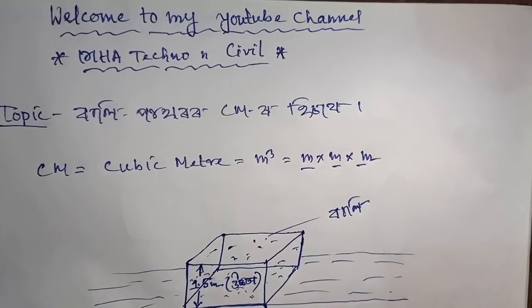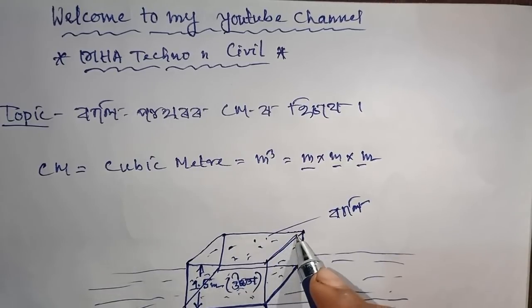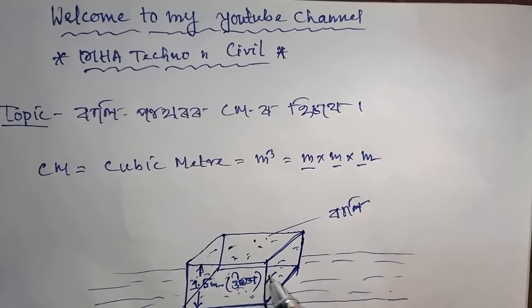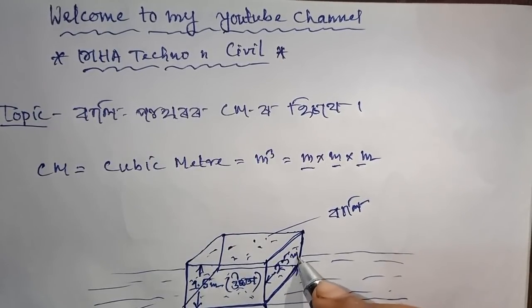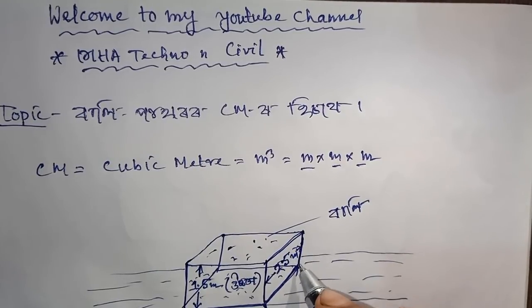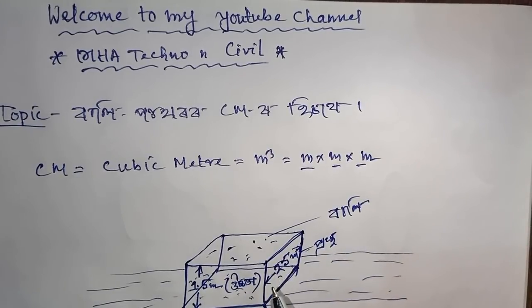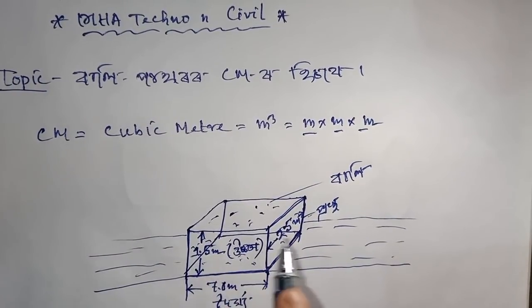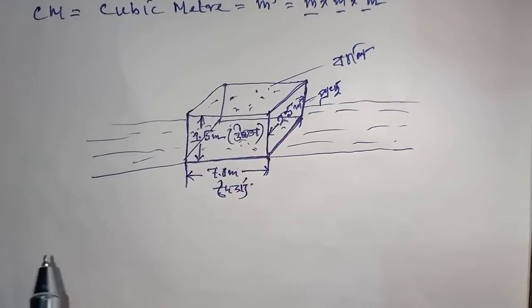The length is 7.0 meters, 1.5 meters height. The breadth is 2.5 meters. So when we calculate 2.5 meter × 8.0 m, we get our dimensions for this example.